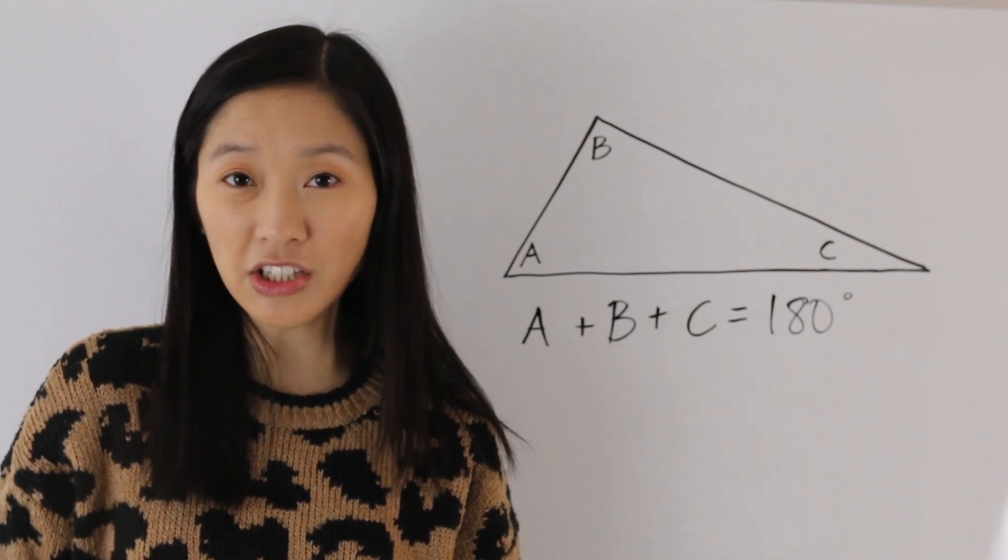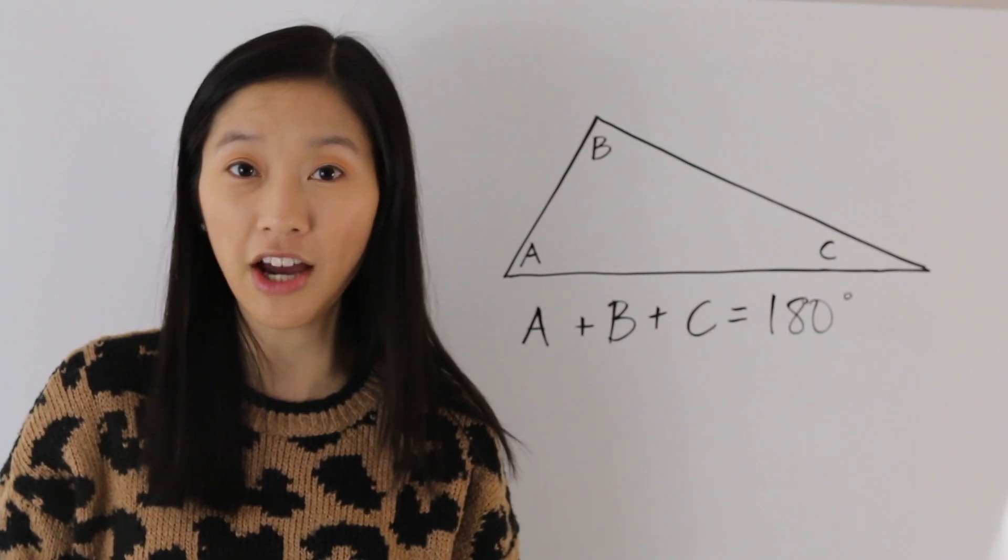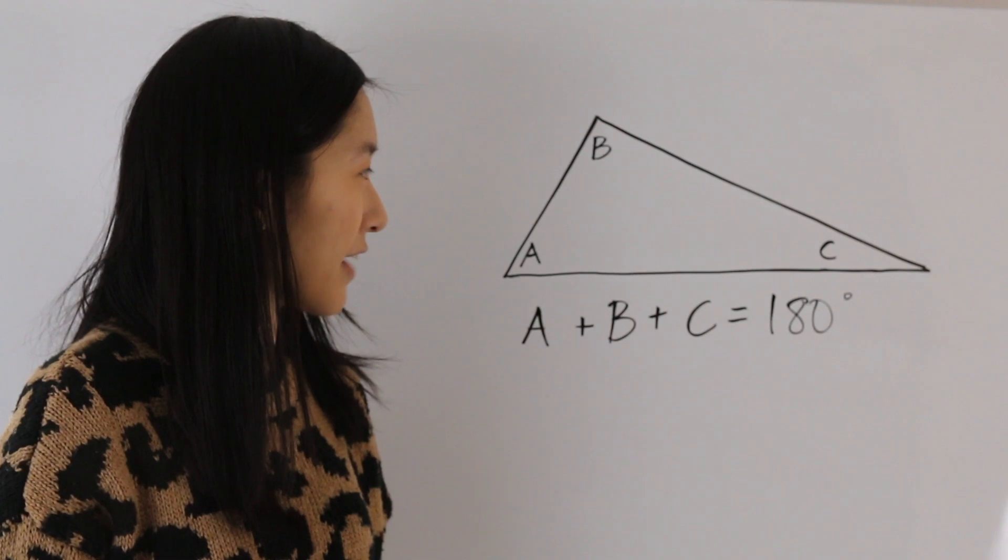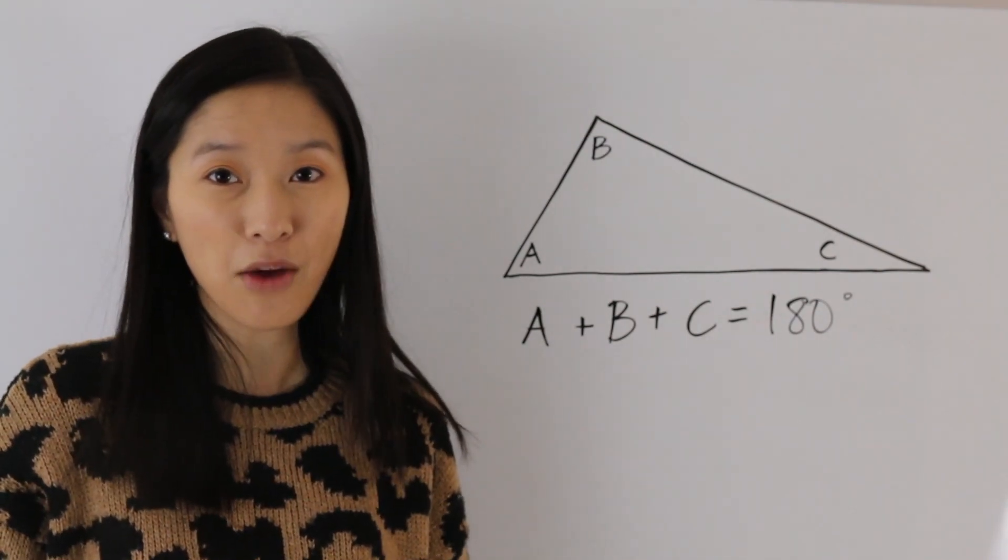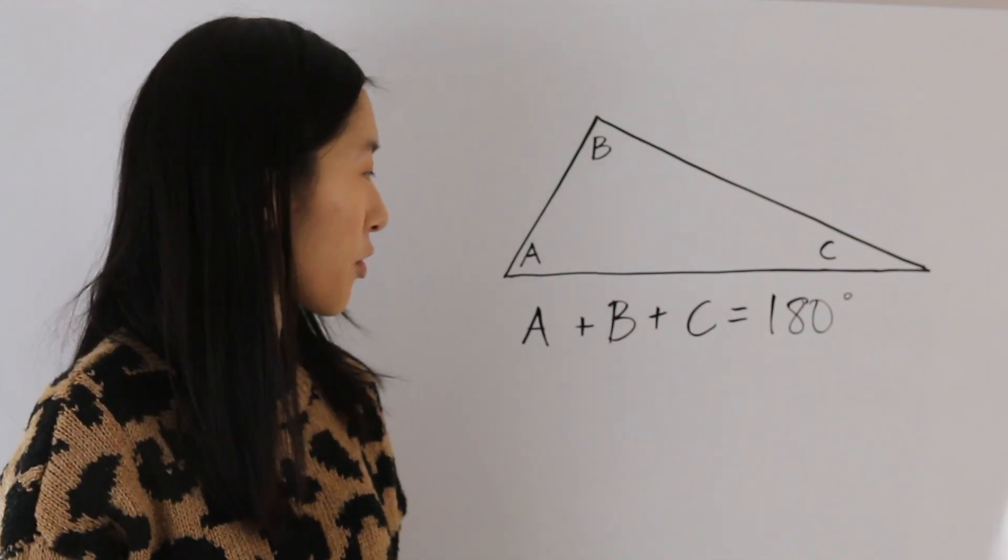So the first most important thing to note is that whenever you sum up the three angles in a triangle, you should get 180 degrees. So let's take a look at this triangle we have here. So we have angles A, B, and C, and when we sum them all up, we get 180 degrees.